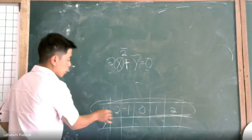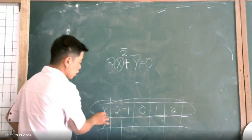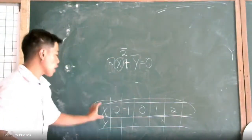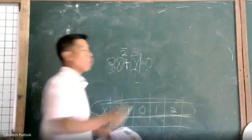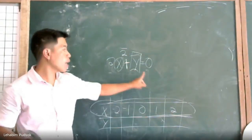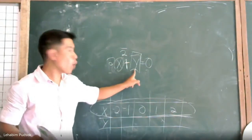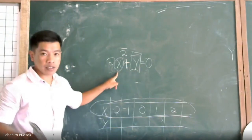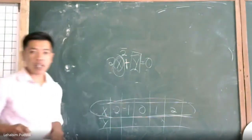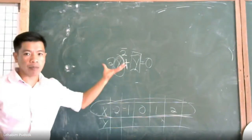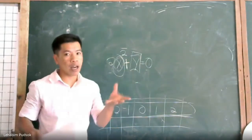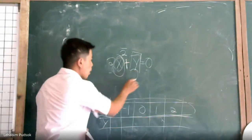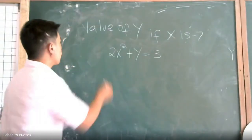We can change x to negative 2, negative 1, or 0. As x changes, our dependent variable y changes also. Y is dependent on x, but x is independent — we can change it anytime we like. We cannot change y as we like because y is dependent on x.